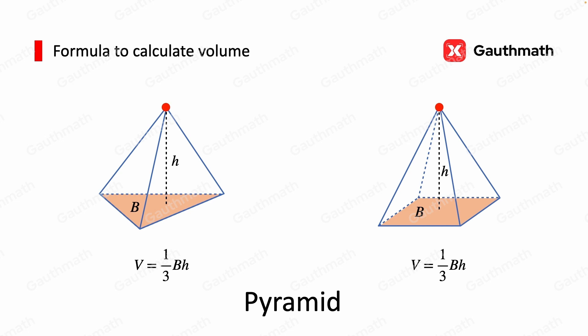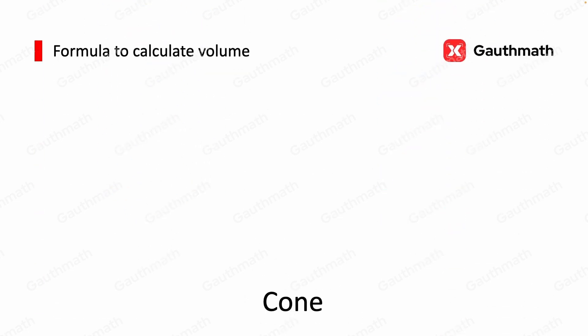And the next one is a cone. A cone can be formed by rotating a right-angled triangle 360 degrees, like this. And now we have a cone. The volume of a cone is equal to one-third of the base times H. And since the base of a cone is a circle, the formula becomes one-third times pi R squared times H, where R is the radius of the base and H is the height of the cone.